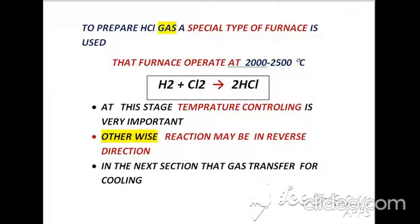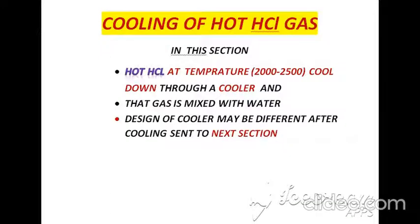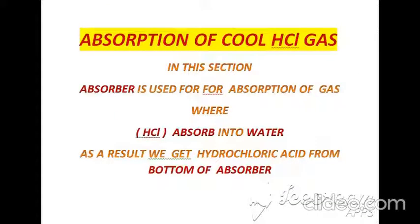The furnace used for the reaction of hydrogen and chlorine gas works at a temperature range of 2000 to 2500°C, and at that stage the temperature must be controlled, otherwise the reaction may reverse direction. After that, the product is sent to the next section for cooling. When HCl gas exits the furnace it has a high temperature of around 2000 to 2500°C, so to decrease its temperature, the hot HCl gas passes through a cooler where water is used as a coolant, making it ready for the next section.